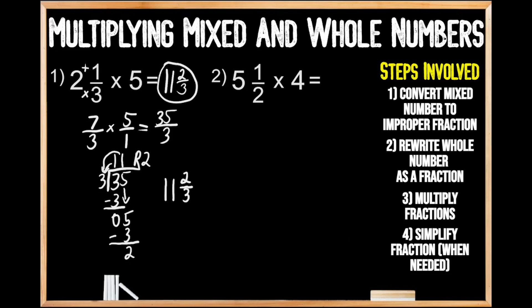Now we're going to move on to question number two, where we're being asked to multiply the mixed number five and one half times four. Remembering that our first step is to convert our mixed number to an improper fraction: we multiply our denominator by the value of our whole number — two times five gives us 10 — then add on the numerator: 10 plus one gives us 11, for 11 halves.